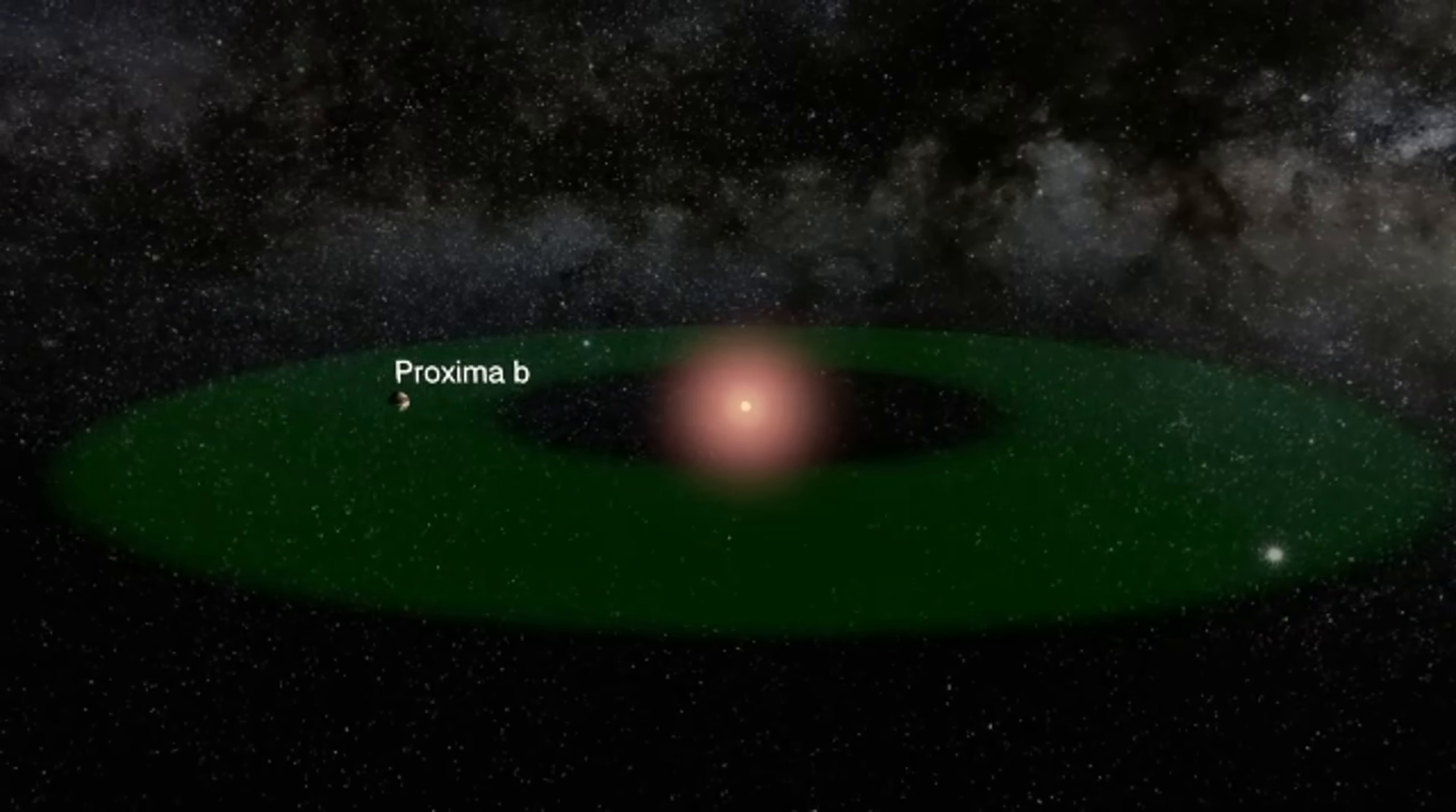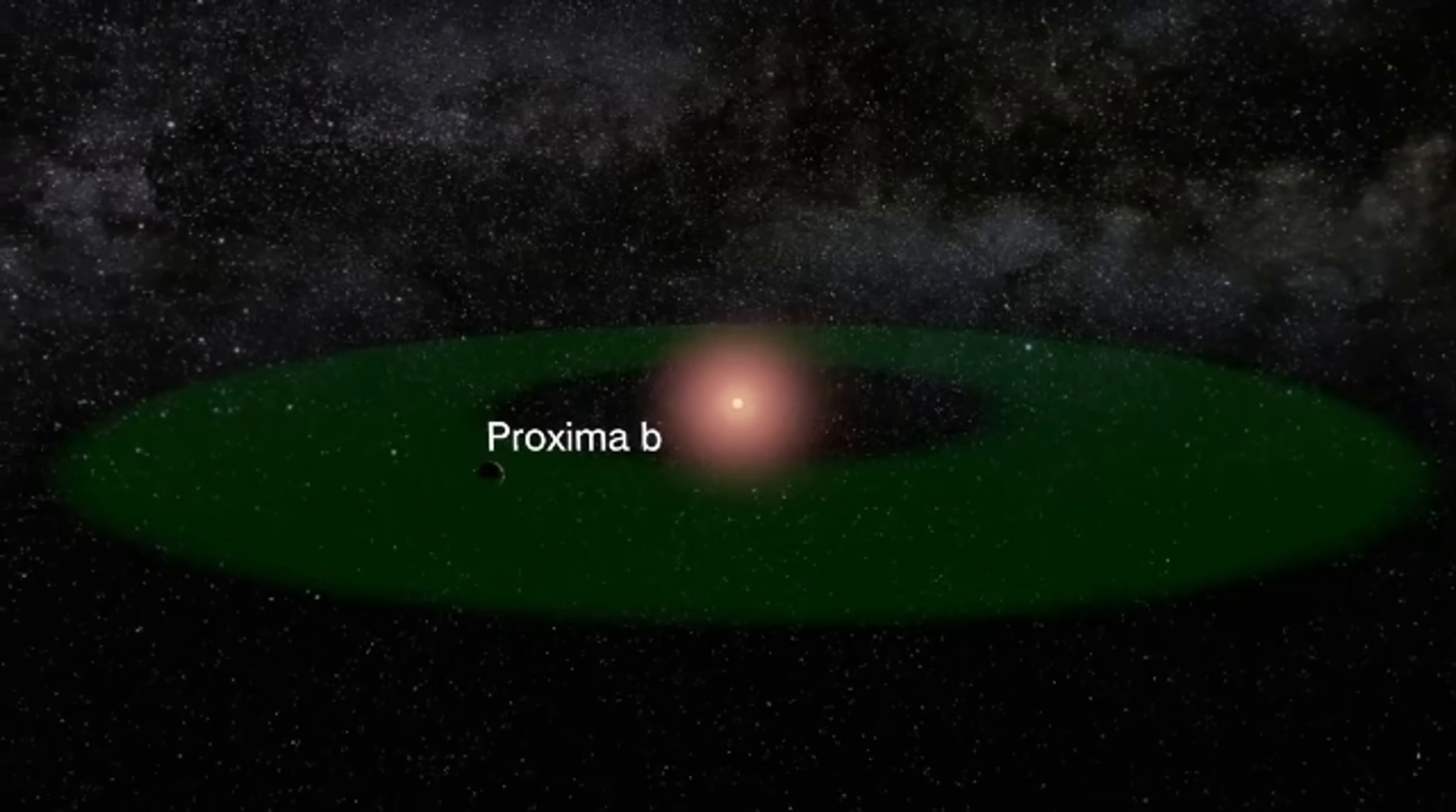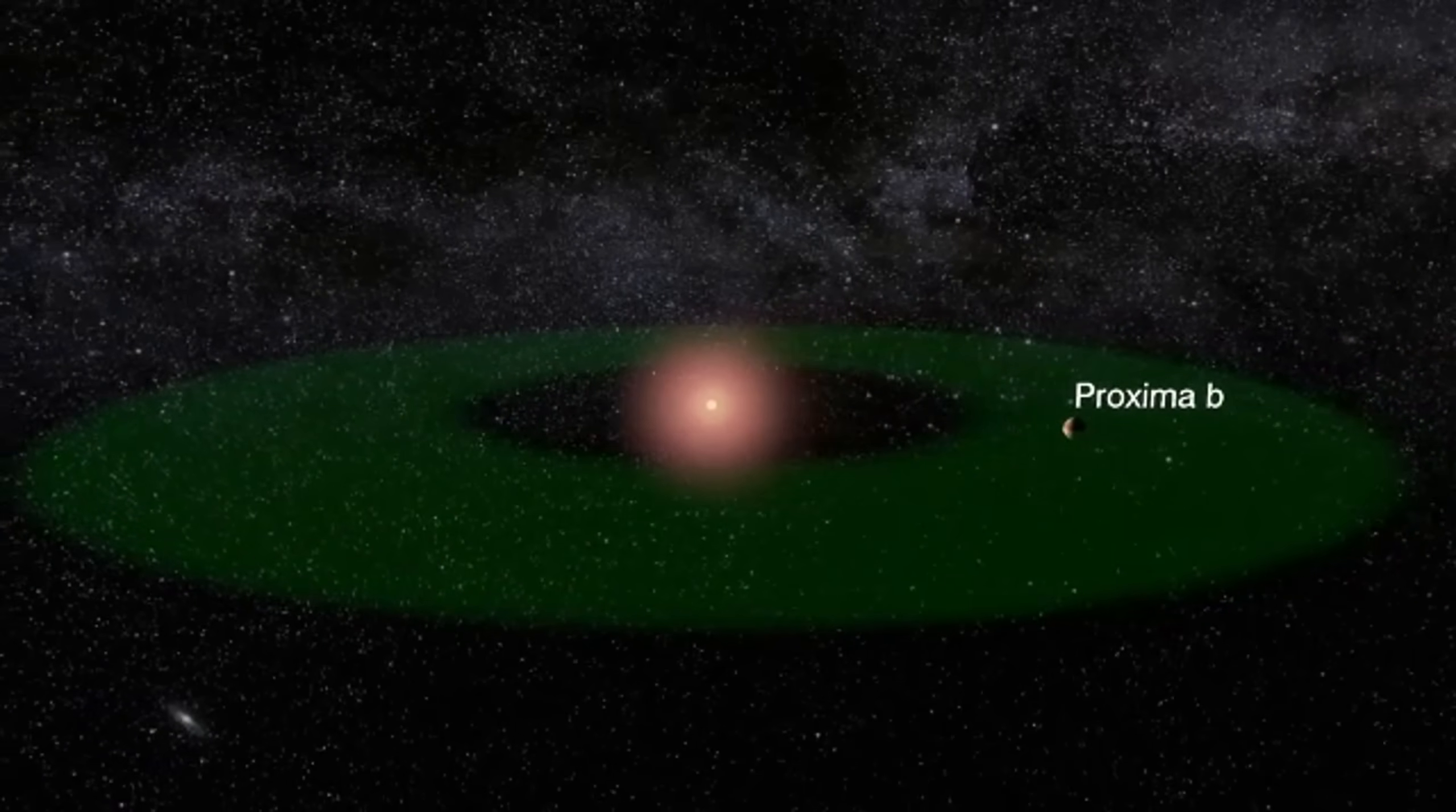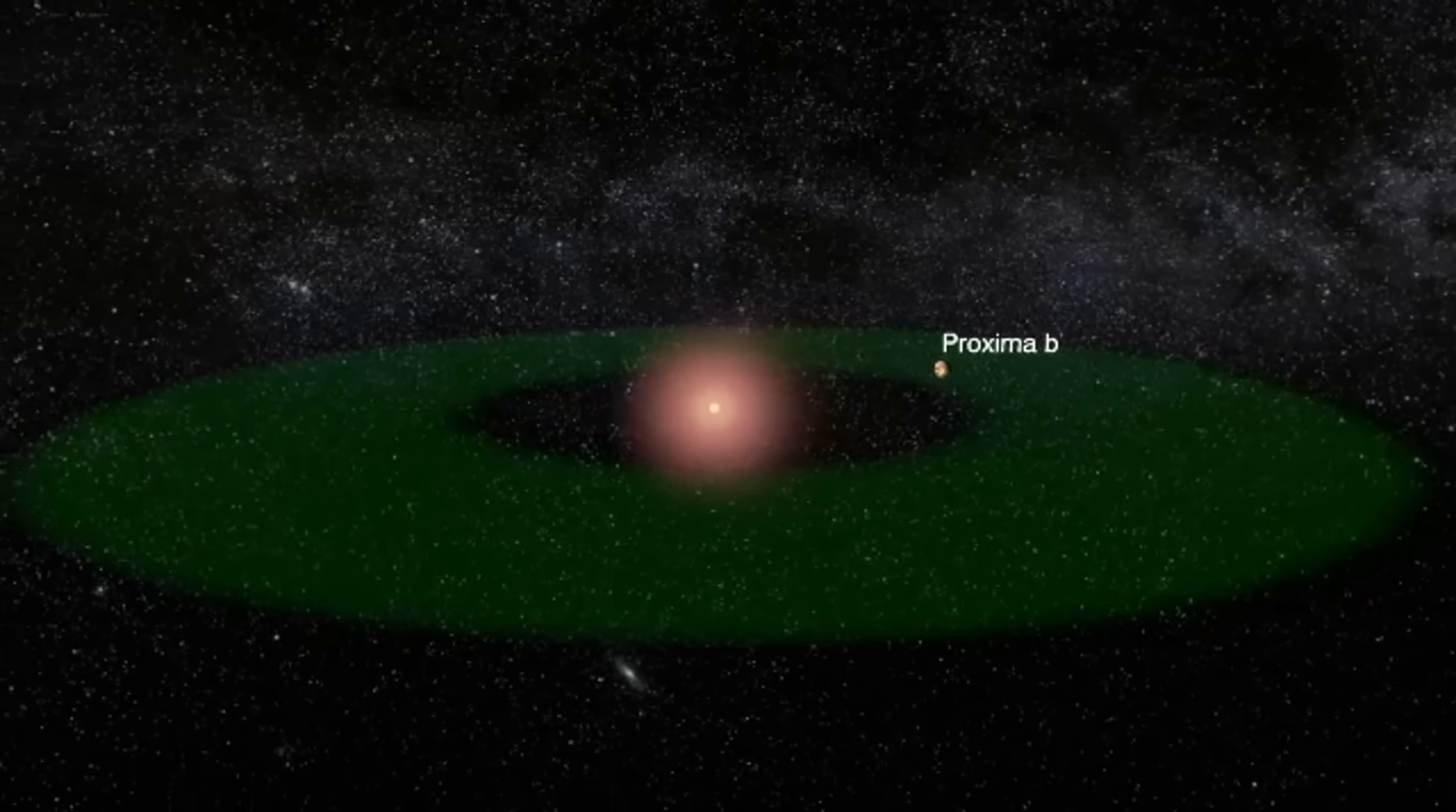There's more, though. Proxima Centauri B is not alone in its journey around the red dwarf star. Proxima Centauri C, a super-Earth, is one of its fellow travelers, and who knows what else this stellar system can be hiding? Maybe another companion that we haven't yet found?